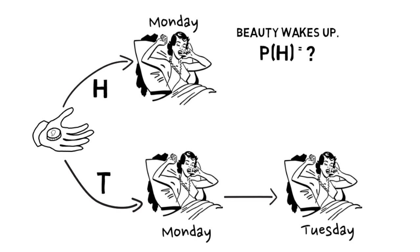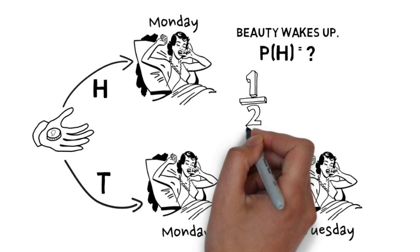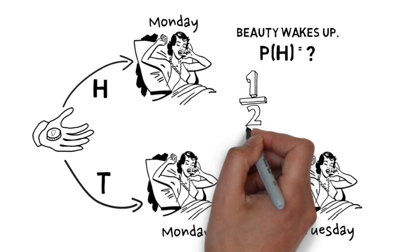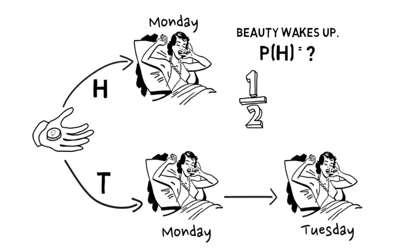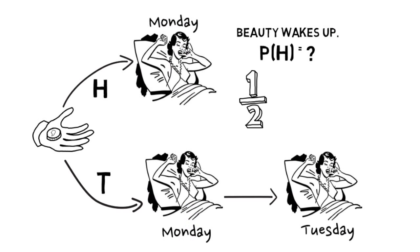So there are two ways that Sleeping Beauty could approach this question. On the one hand, she could say: the probability of heads is one half. Before I went to sleep, if you had asked me what's the chance this coin will come up heads, I would have said one half, because it's a fair coin. Also, I knew going into this experiment that whatever happened, I would find myself waking up. And here I am, I'm finding myself waking up. I haven't learned anything new that I didn't already know was going to happen before the experiment started. Therefore, there's no reason that I should be updating my probability from the one half that I would have put on it beforehand. So it's one half.